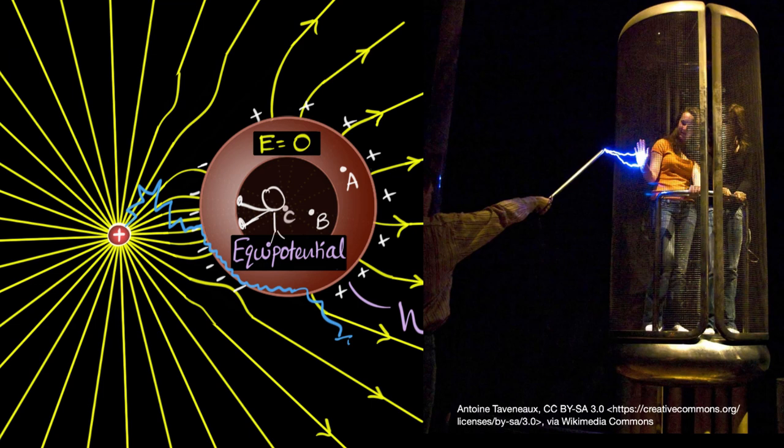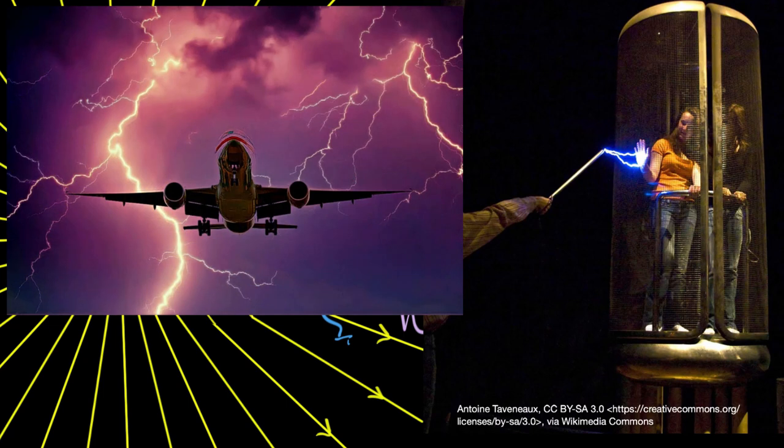This is also the reason why aeroplanes can get struck by lightning, and nothing will happen to the inside, because the entire aeroplane is a metallic body. It acts like a Faraday cage, and therefore lightning will not penetrate, and in most cases, even when the lightning strikes an aeroplane, it doesn't do any damage.